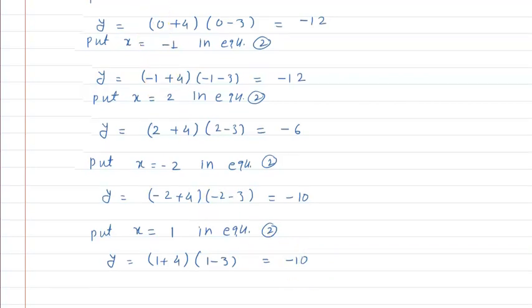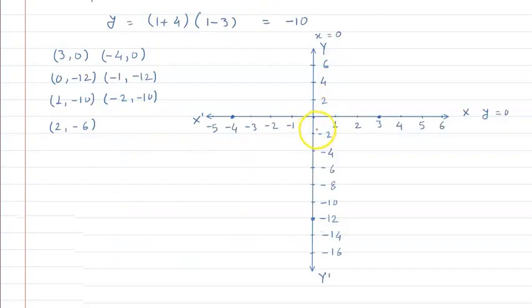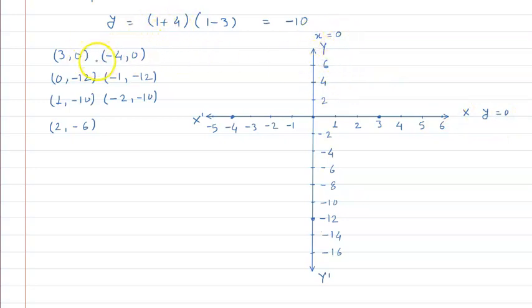Ab in order pairs ko Cartesian plane pe plot karna hoga. Jab graph x-axis ko jahan bhi cut karega, un points ko join karke jo triangle form hoga, us triangle ka area find out karna hai. So let's draw the Cartesian plane in which x and x-dash axis intersect at origin O. X-axis par y coordinate 0 hota hai aur y-axis par x coordinate 0 hota hai.